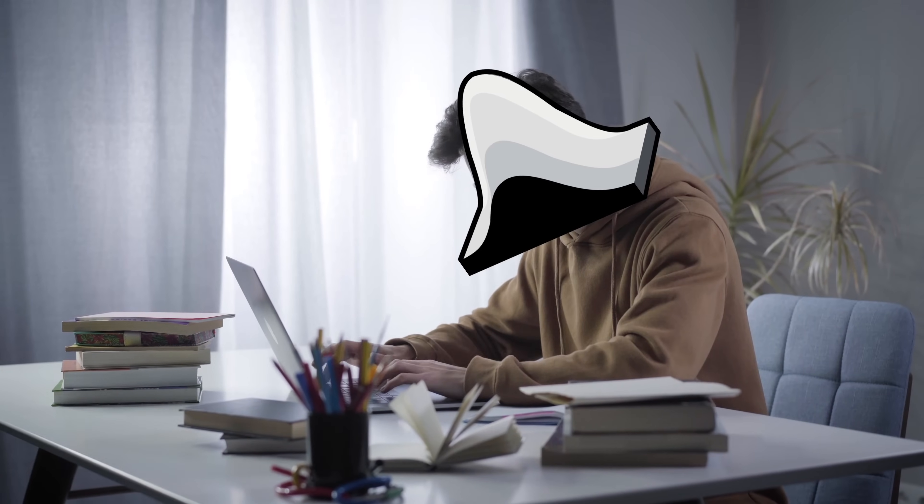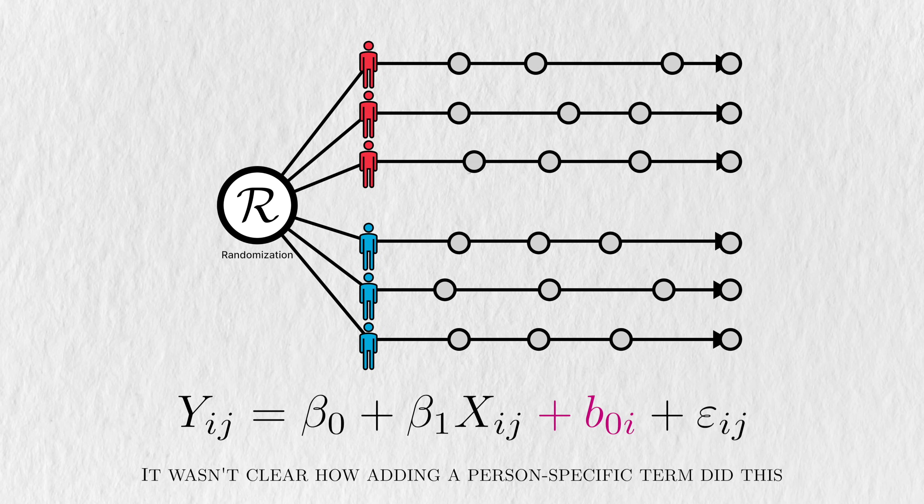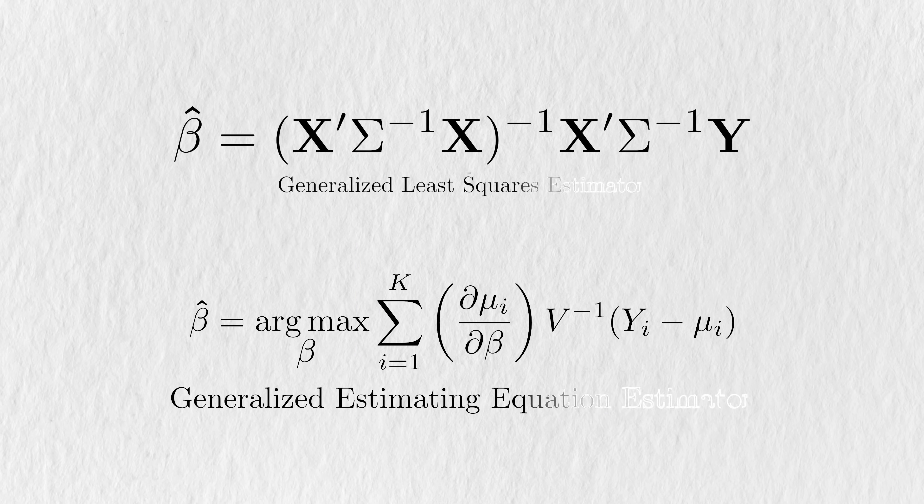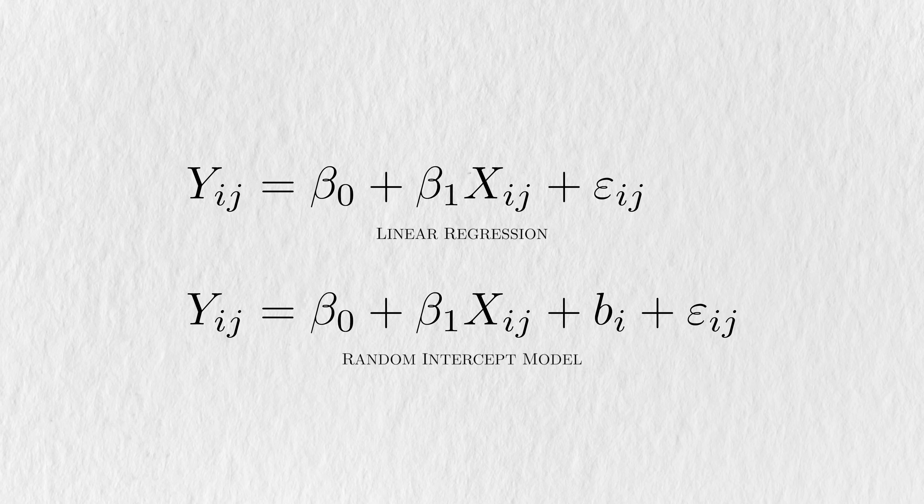When I first learned about mixed effects models, I was a little confused. I was told that it was a solution for correlated data, but it wasn't really clear to me how adding a random intercept or slope accomplished this. Unlike the GLS or GEE model, which explicitly modeled the correlation, the mixed effect model handles correlation in a more subtle way. Here's a standard linear regression next to a random intercept model. You can see that they're almost the same besides the addition of the random intercept. Before, we looked at it as a person specific intercept, but we can also view it as an extra source of noise.